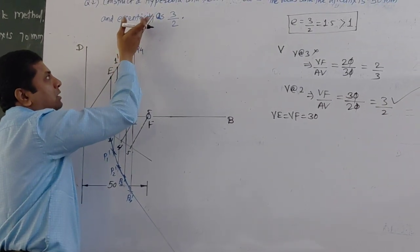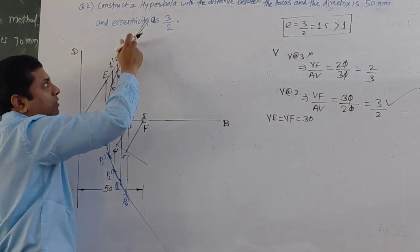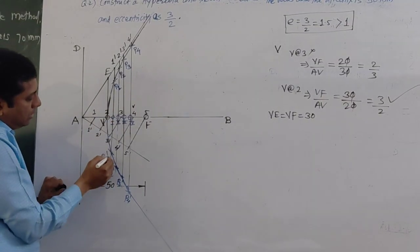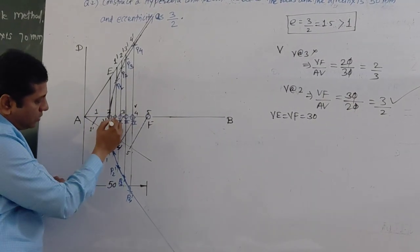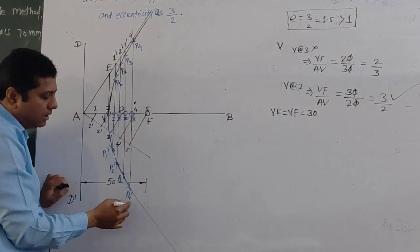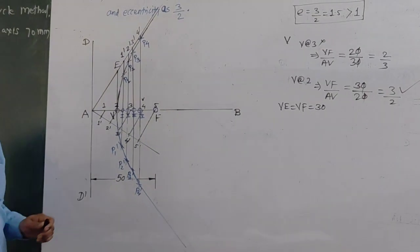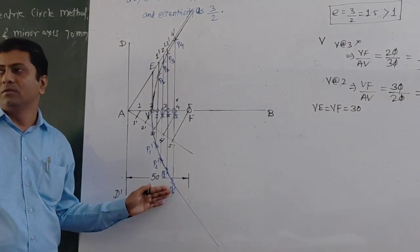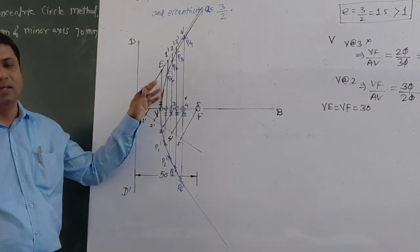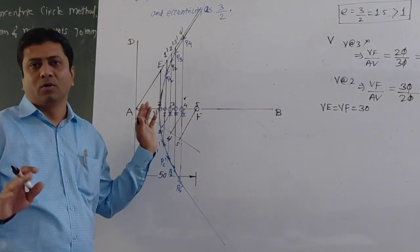Similarly on the other side, draw a curve passing through V, P1', P2', P3', P4' — and extend it below, where it also becomes almost straight. By this method we have drawn the hyperbola. This is our final hyperbola. Thank you very much.